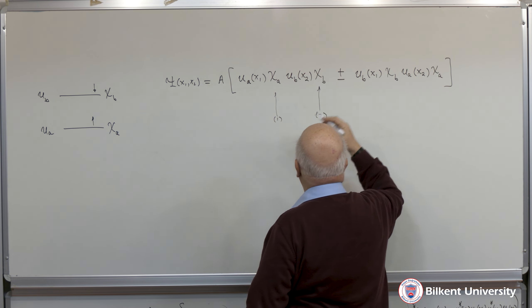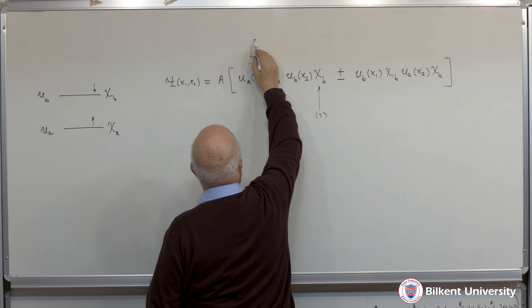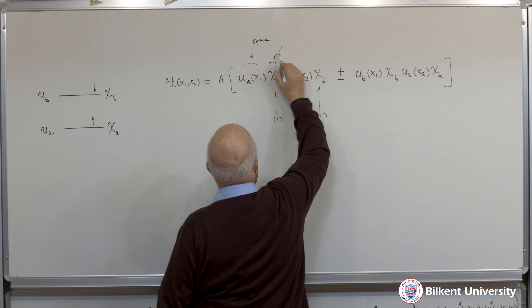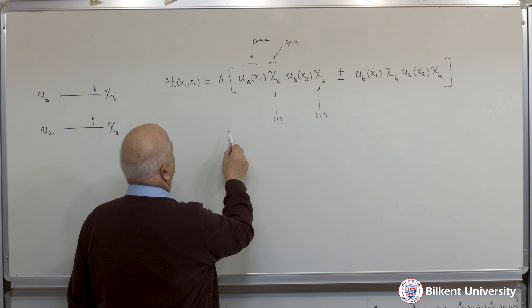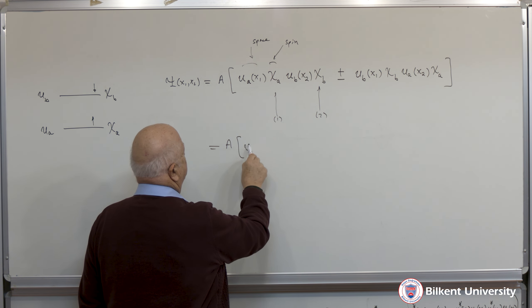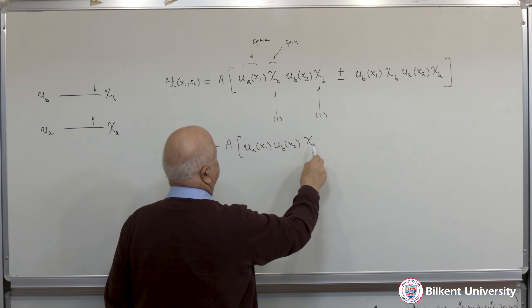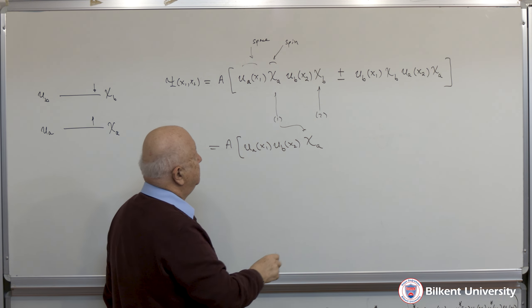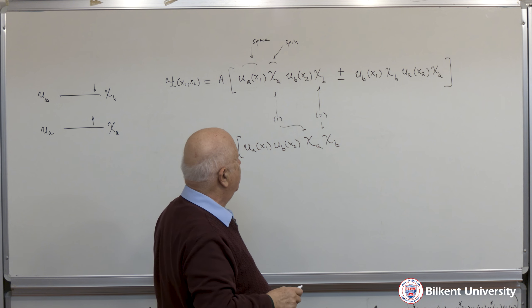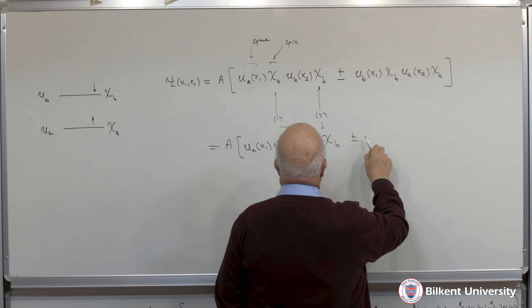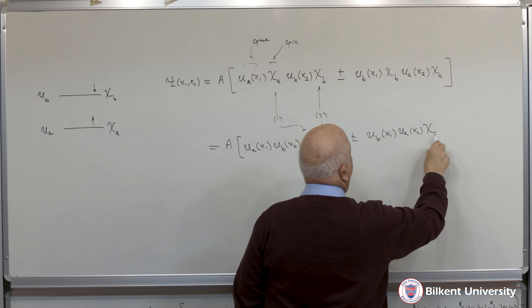And then I get uA of x2, chi A. So this is now a symmetrized or anti-symmetrized version of the full wave function. The uA part is the space part and the chi part is the spin part. In this case the spin and space parts are all mixed up. Another way of writing this is A times uA of x1, uB of x2 — separating the spin parts — chi A for the first particle, chi B for the second one. Then plus or minus uB of x1, uA of x2, and then chi B, chi A.